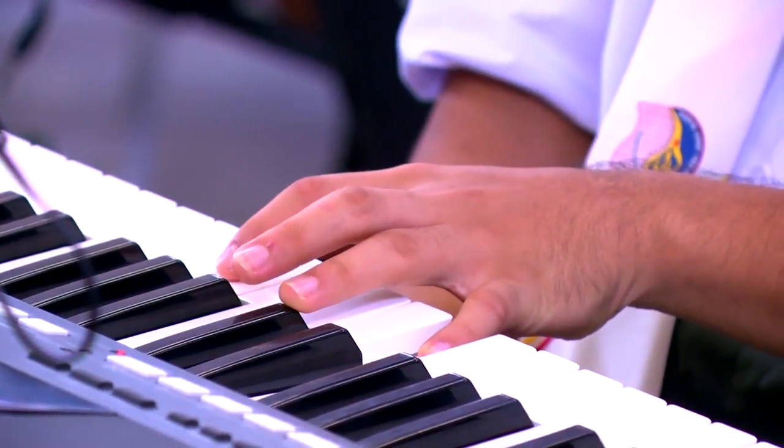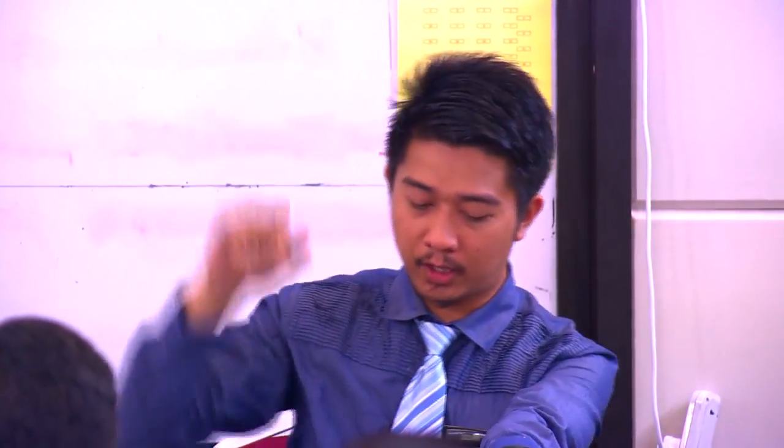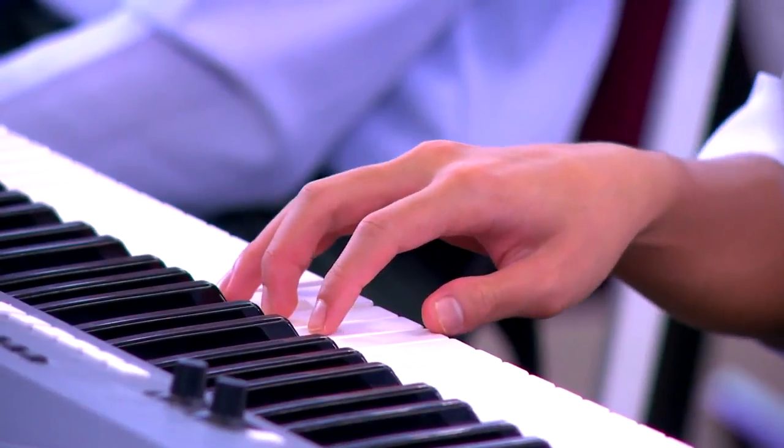Semua sekali C - one, two, three, four. Seterusnya gunakan jari yang ketiga untuk nod E. Kita tekan nod E menggunakan jari ketiga. One, two, three, four. Dan yang terakhir adalah nod kelima. Nod kelima untuk C major ialah G. Kita gunakan jari kelima. Semua letakkan jari dekat G, jari kelima. Kita akan tekan nod G - one, two, three, four.